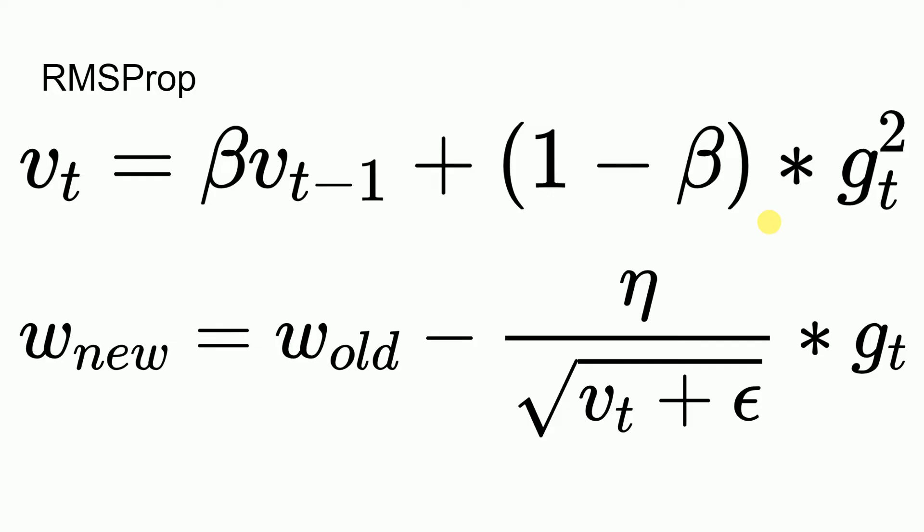RMS prop, or root mean square propagation, tries to dampen the oscillations but in a different way when you compare it with gradient descent with momentum. You might have also learned about adjusting the learning rate as you descend from the hill. Well, you don't have to do it manually. RMS prop takes care of it. RMS prop chooses a different learning rate for each parameter. That is what is unique about RMS prop.